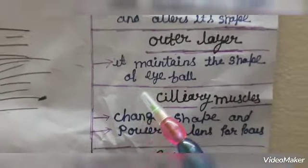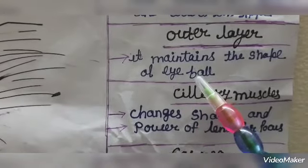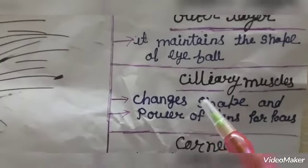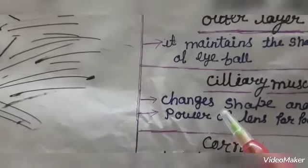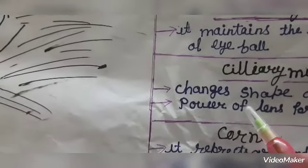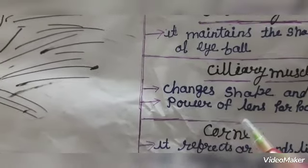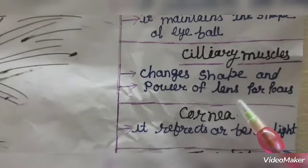Outer layer, outer layer maintains the eye wall. It maintains the eye wall. Ciliary muscles change the shape, changes shape of the lens, and power of lens. The focal power of the lens is handled by ciliary muscles.